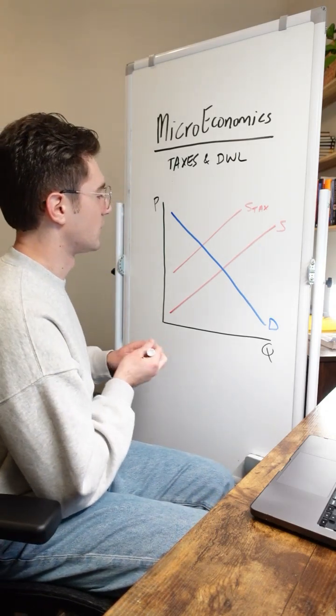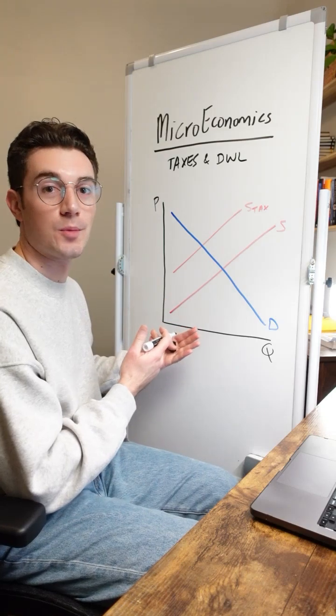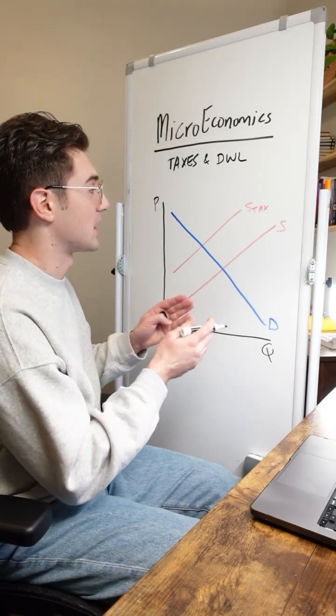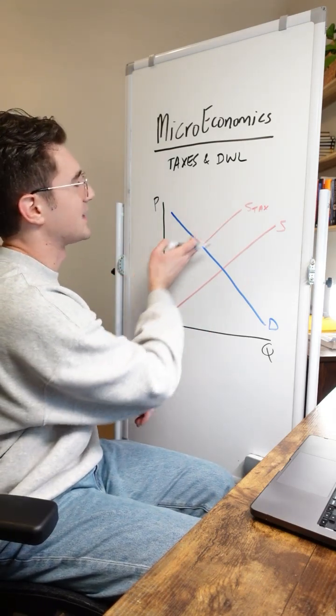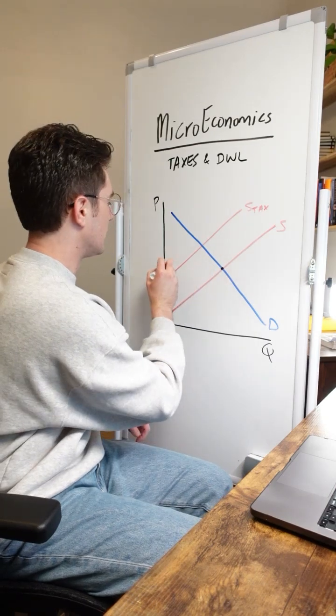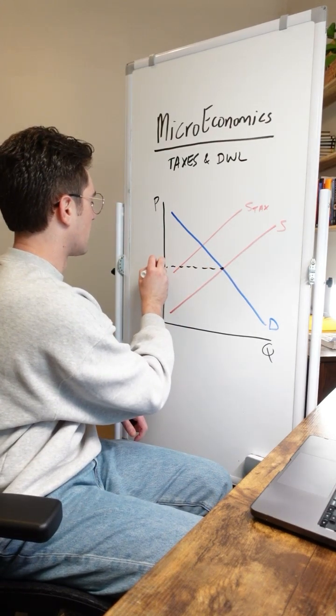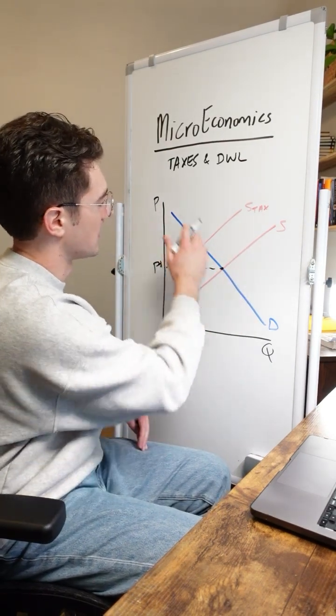All right, with that being said, I first want us to understand where consumer and producer surplus starts out at before the tax. So ignore this S-tax curve. Before the tax is instituted in the market, it's going to operate at this price. That's the intersection of the supply and demand curves.